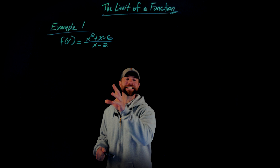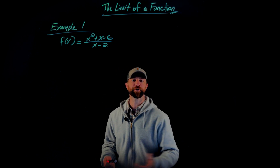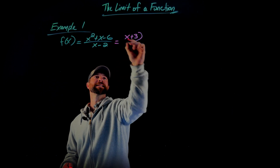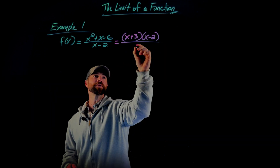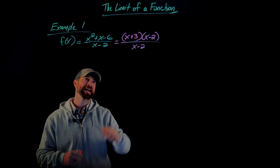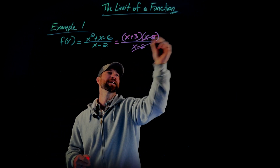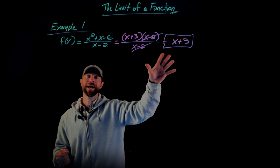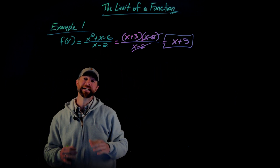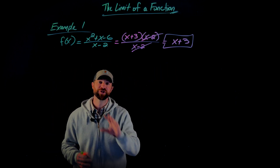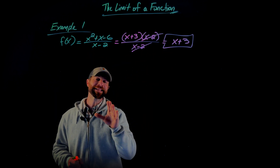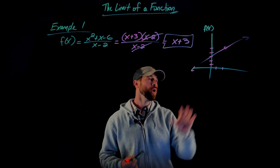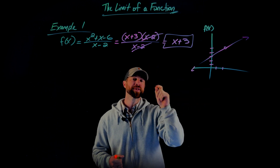Let's reduce this function to make it easier to get a graphical representation. If we factor the numerator we get x plus 3 times x minus 2. We can then reduce this by canceling the common factor of x minus 2, giving us the expression x plus 3. This means the original rational function is exactly the same as x plus 3 except at the point x equals 2, giving us a linear equation with a hole at 2.